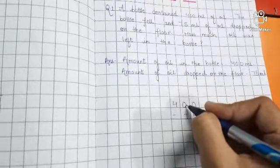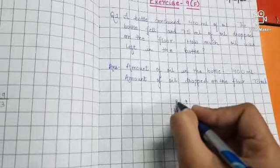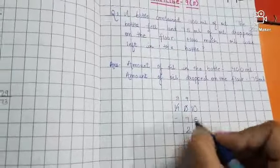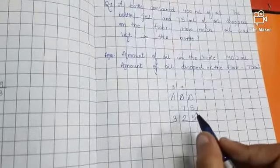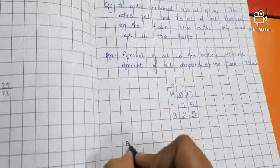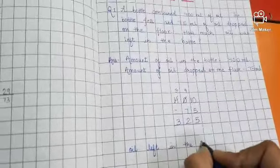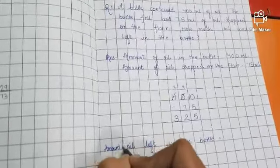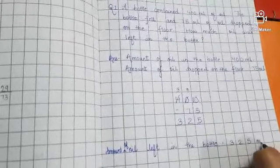So 0 minus 5. As we cannot subtract 5 from 0, we will take one borrow from this 0 which makes this 0 become 10. This 0 will become 9 and this 4 will become 3. Now 10 minus 5 is 5, 9 minus 7 is 2, and 3 as it is. So oil left in the bottle, amount of oil left in the bottle is equal to 325 ml.